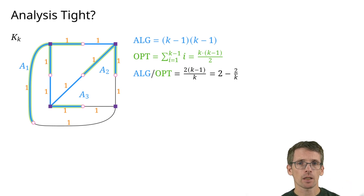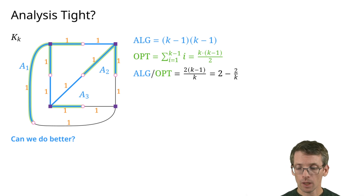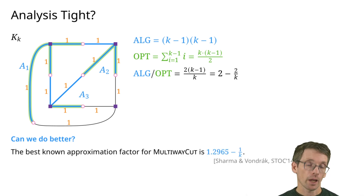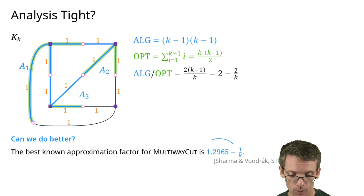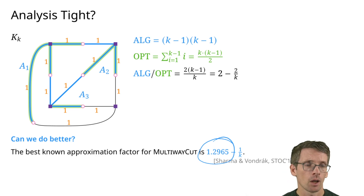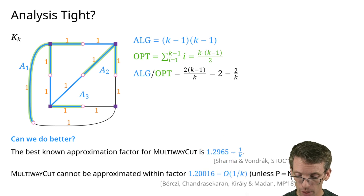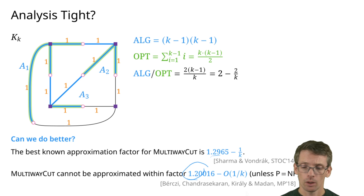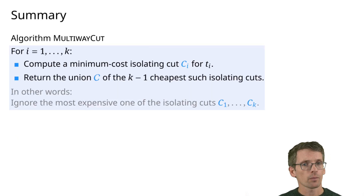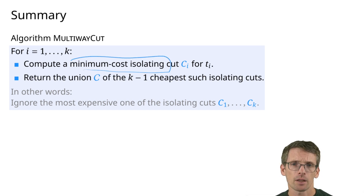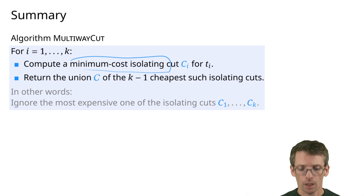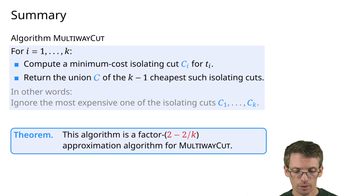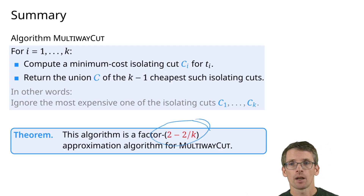The analysis is tight. There are also better algorithms: the best known achieves an approximation ratio of approximately 1.29, and there is a fairly strong lower bound of 1.2, so these are quite close. To wrap up: the algorithm computes min-cost isolating cuts using min s-t cuts, discards the most expensive one, and takes the union of the remaining k − 1, giving a 2 − 2/k approximation for the multi-way cut problem.